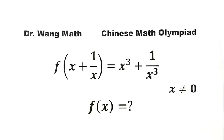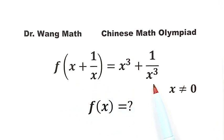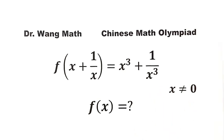In this video, we will tackle a function problem. The question is about the function f of x plus 1 over x equals x to the third plus 1 over x to the third, where x is not equal to zero.